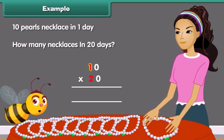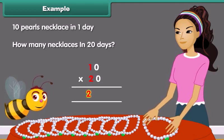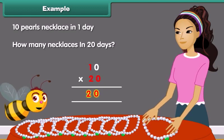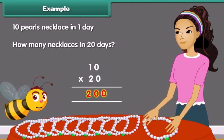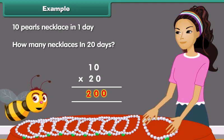Step 1: Multiply the numerals without zeros. 2 multiplied by 1 is equal to 2. Step 2: Count and add the number of zeros toward the right side of the answer. In this case, we have two zeros. Thus, the final answer becomes 200.